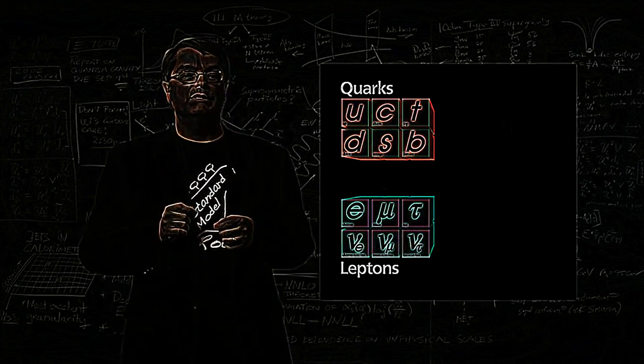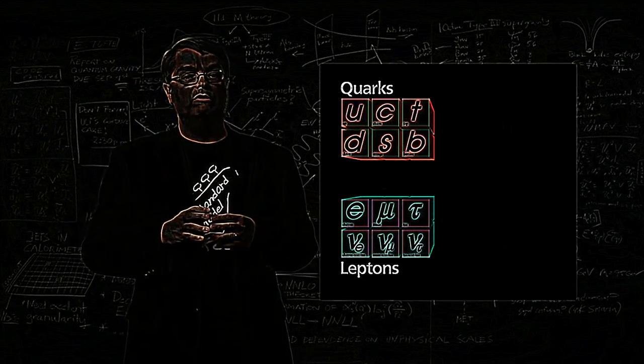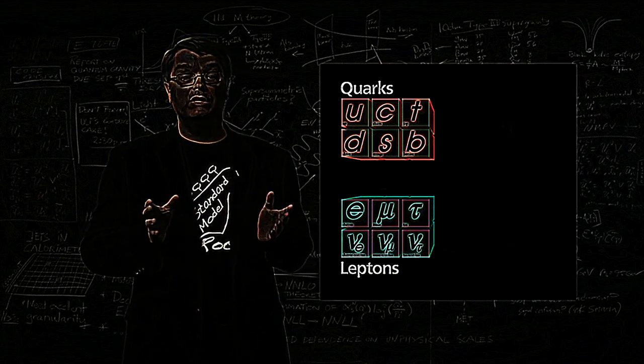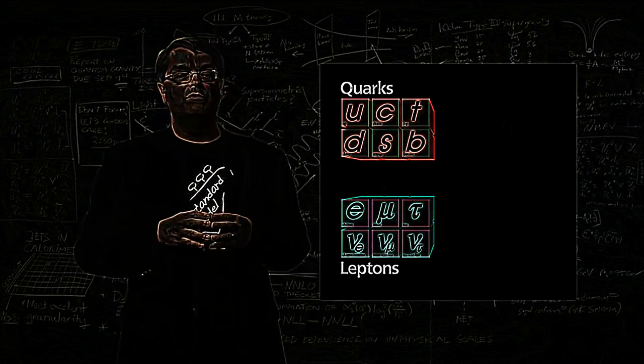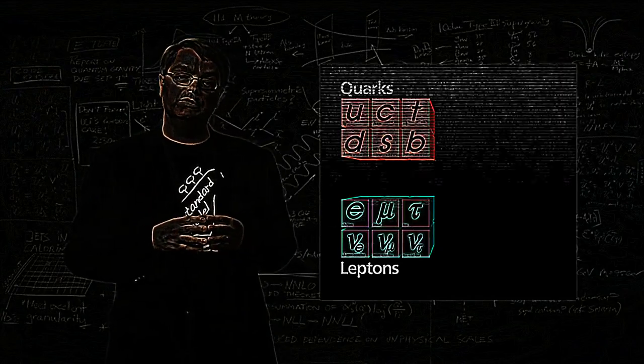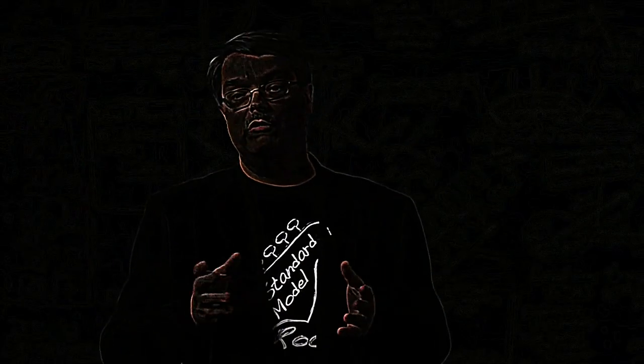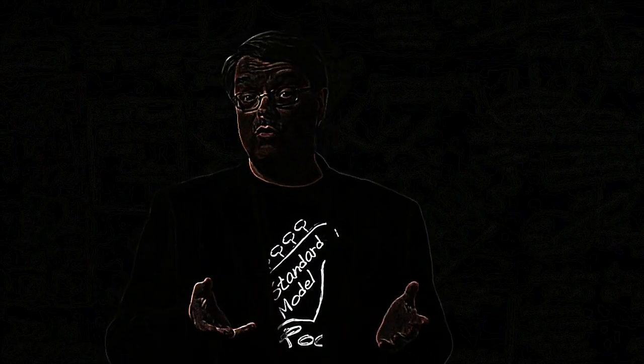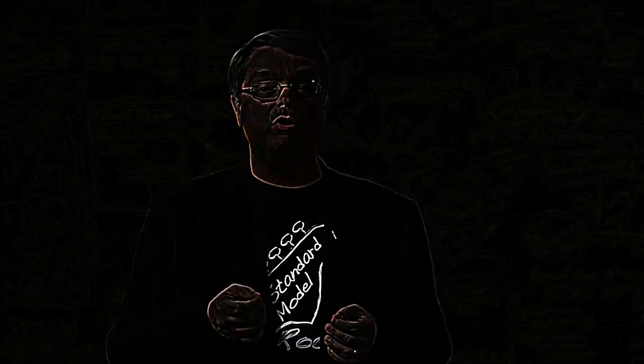These quarks and leptons include every particle that we know of. The up and down quarks and the electron are the building blocks of the cosmos, and the other nine particles have all been observed in our accelerators. However, while the building blocks of nature are important, we've forgotten an important point. This important point is force.